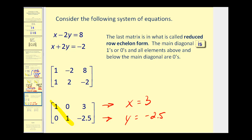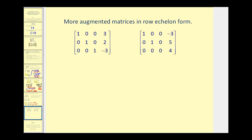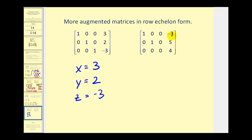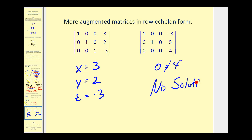Here are a couple more examples of reduced row echelon form. In the first, if we can manipulate an augmented matrix into this form, the solution is immediate by inspection: x equals 3, y equals 2, and z equals negative 3. Looking at the second augmented matrix, there is a problem — the last row translates to 0 equals 4, which is false. This indicates there is no solution to the system of equations.